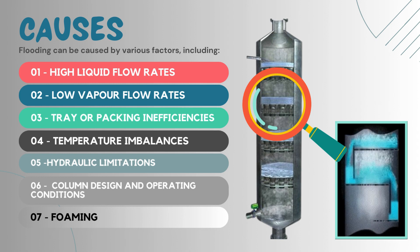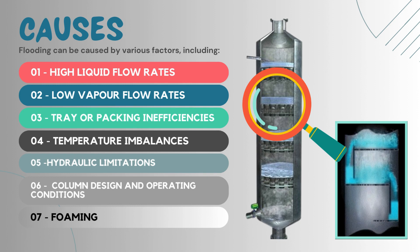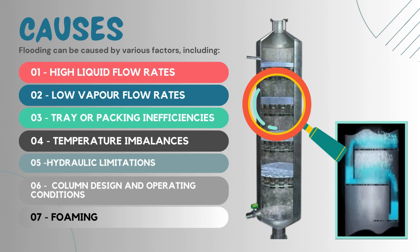The next factor is column design and operating conditions. Inadequate design parameters such as tray spacing, tray efficiency, reflux ratio, or column diameter can lead to flooding under certain operating conditions. Additionally, operating the column outside its design limits — such as exceeding its maximum capacity — can also result in flooding.